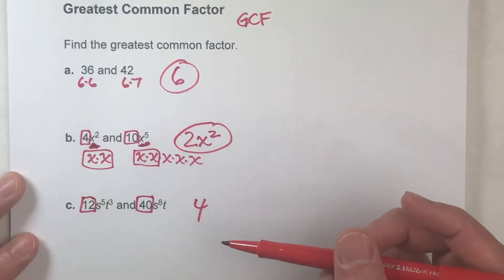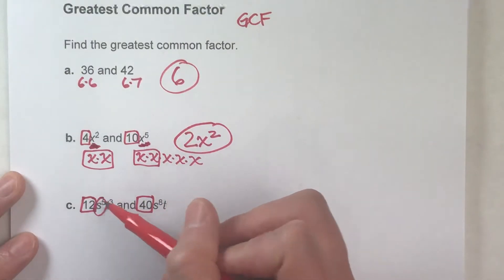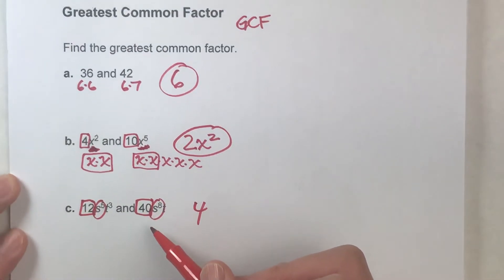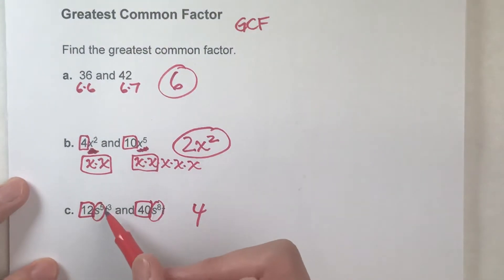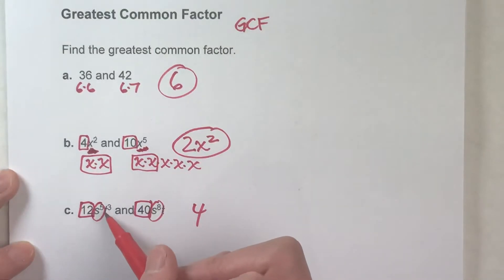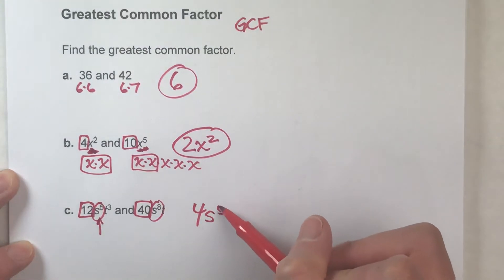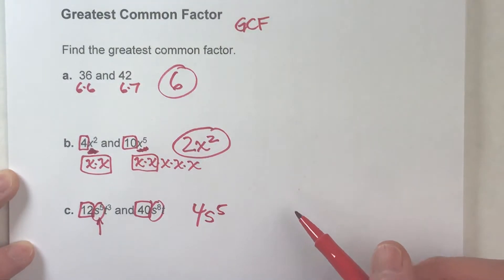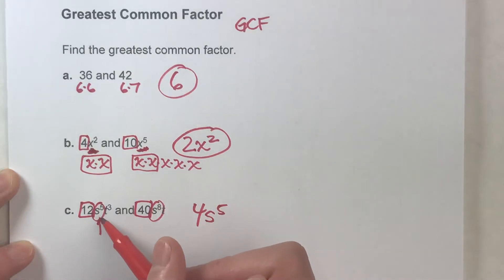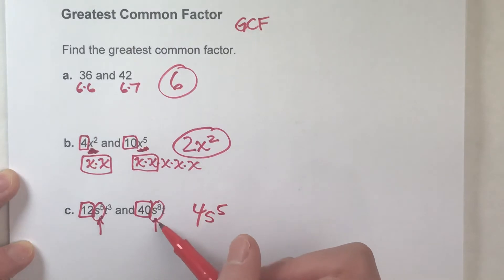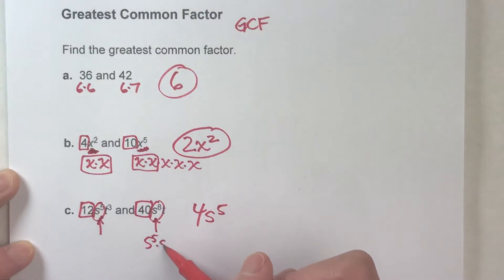Now let's look at the variable parts, starting with the s's. We've got s to the 5th and s to the 8th. Since s to the 5th has the smaller exponent, s to the 5th is the biggest expression that goes into both — because s to the 5th times 1 gives me s to the 5th, and s to the 5th times s to the 3rd gives me s to the 8th.